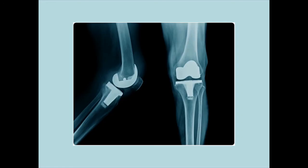If a patient has metal implants, such as a knee replacement, certain electrotherapy treatments may be contraindicated. Ultrasound, for example, reflects off tissue boundaries and may cause overheating through standing waves. Even pulse shortwave, which doesn't generate heat directly, would be unwise to apply over a metal implant.